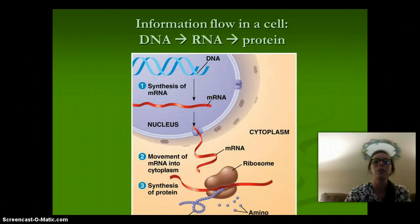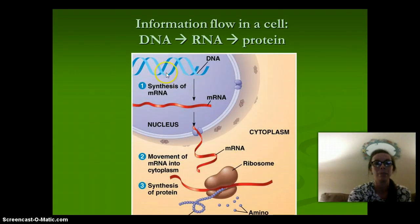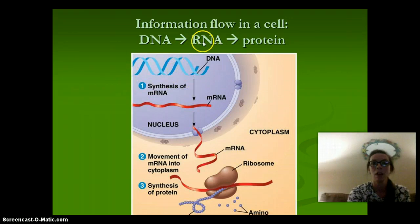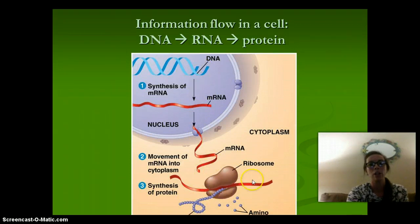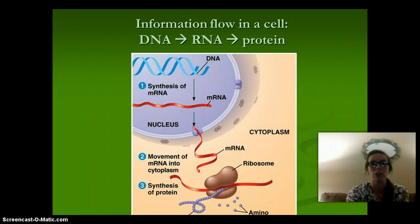The information flow in a cell goes from our DNA, which contains the genetic information, then to RNA. We take the message of the DNA out of the nucleus into the ribosome, which forms our proteins. And our proteins are going to allow our cells to function.